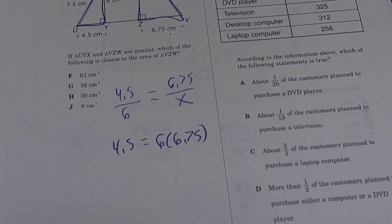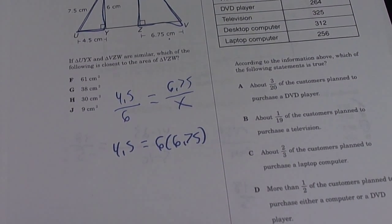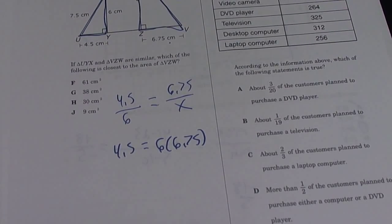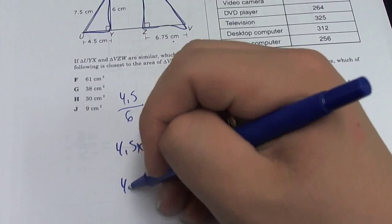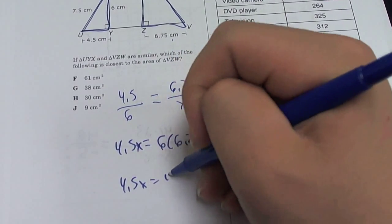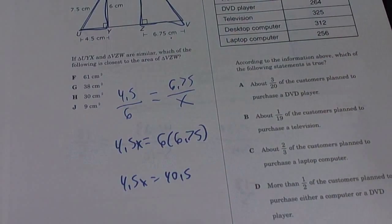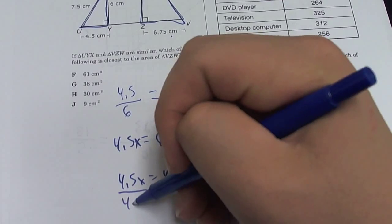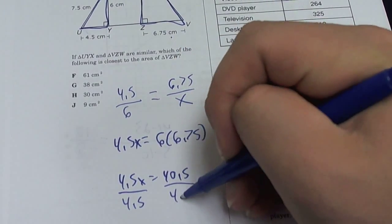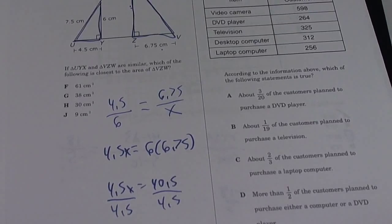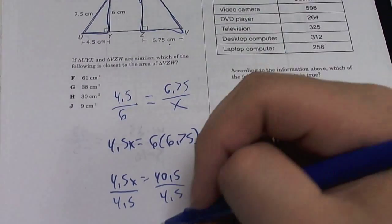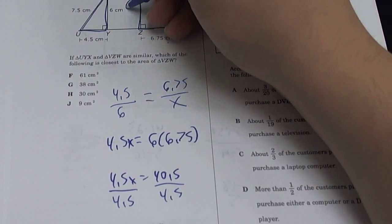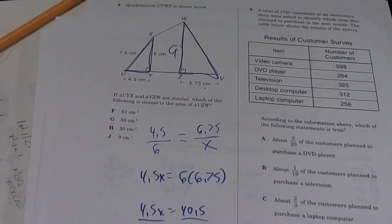Because remember this is how you solve for proportions - you got to cross multiply. And 6 times 6.75 is - 4.5x is equal to 40.5. You got to solve for x, so divide by 4.5. x is equal to 9.